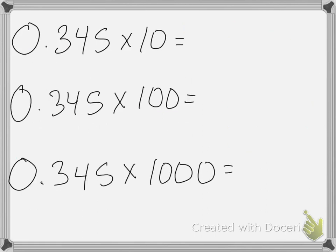What about 0.345? If I multiply by 10, there's one zero, so I shift the decimal place one place to the right. So my answer would be 3.45.